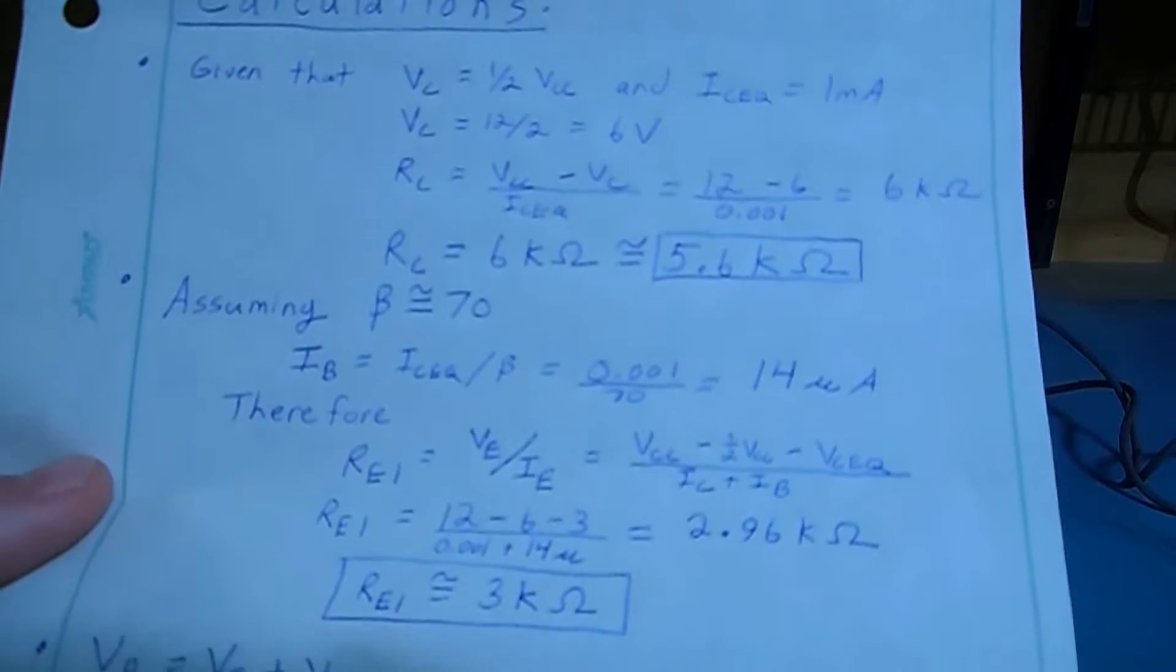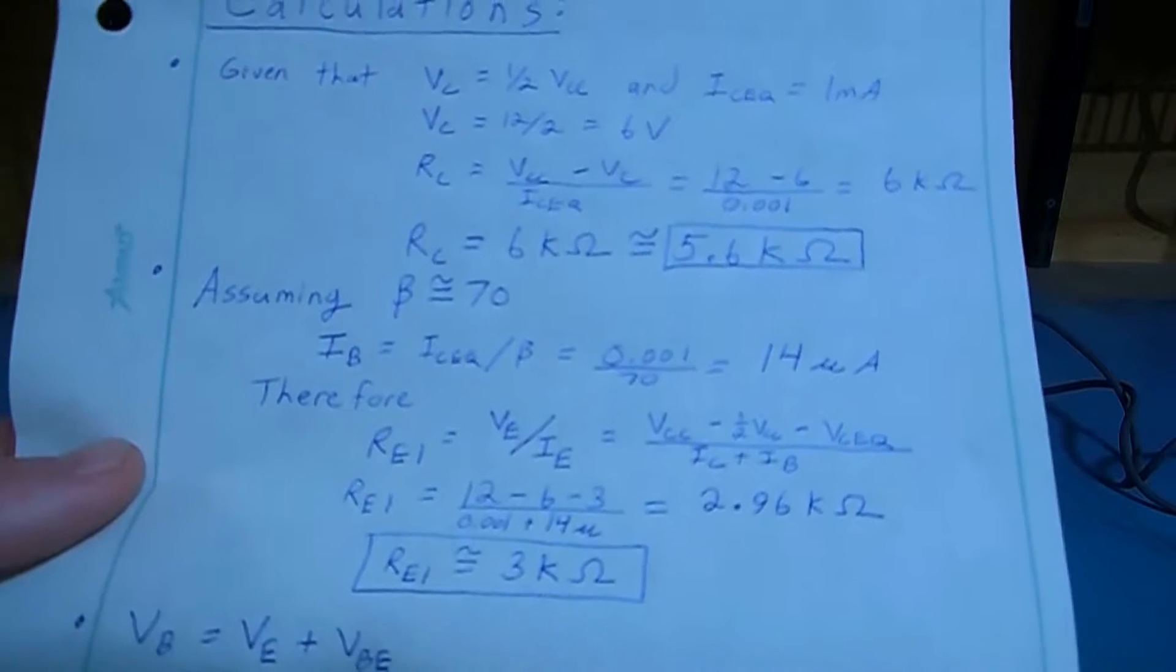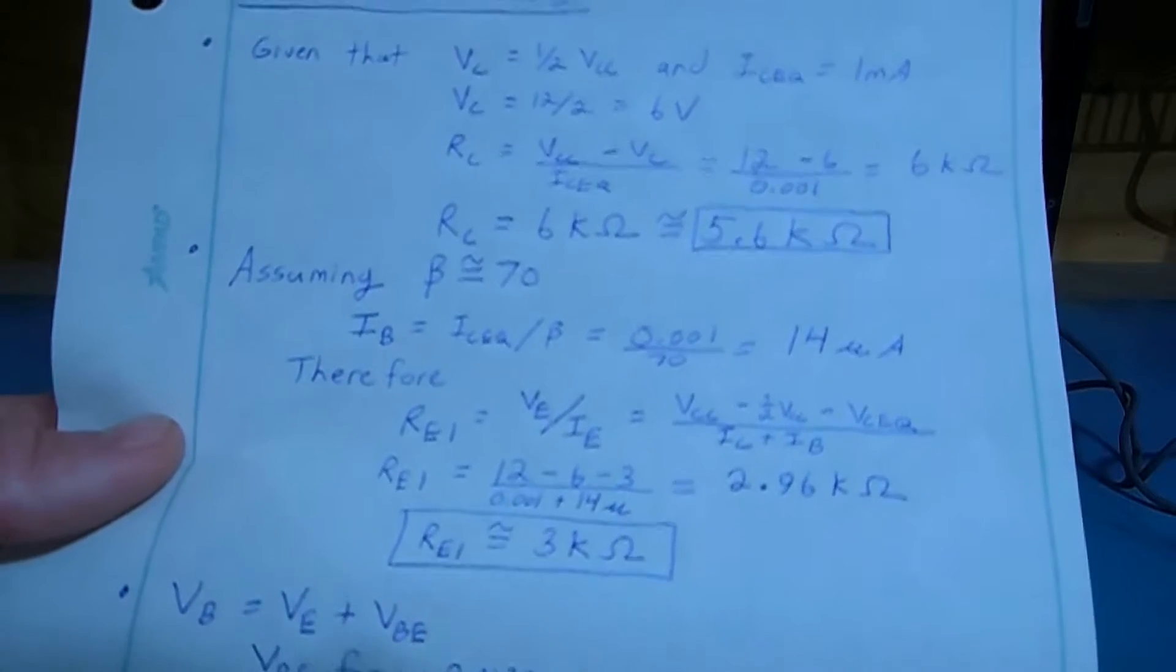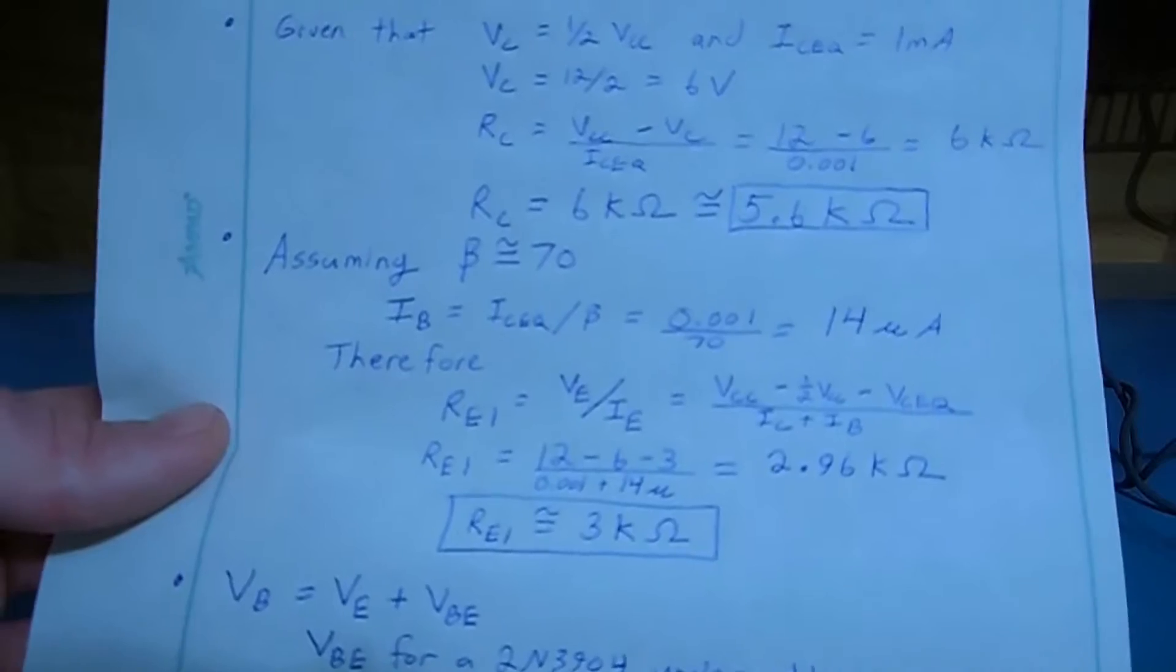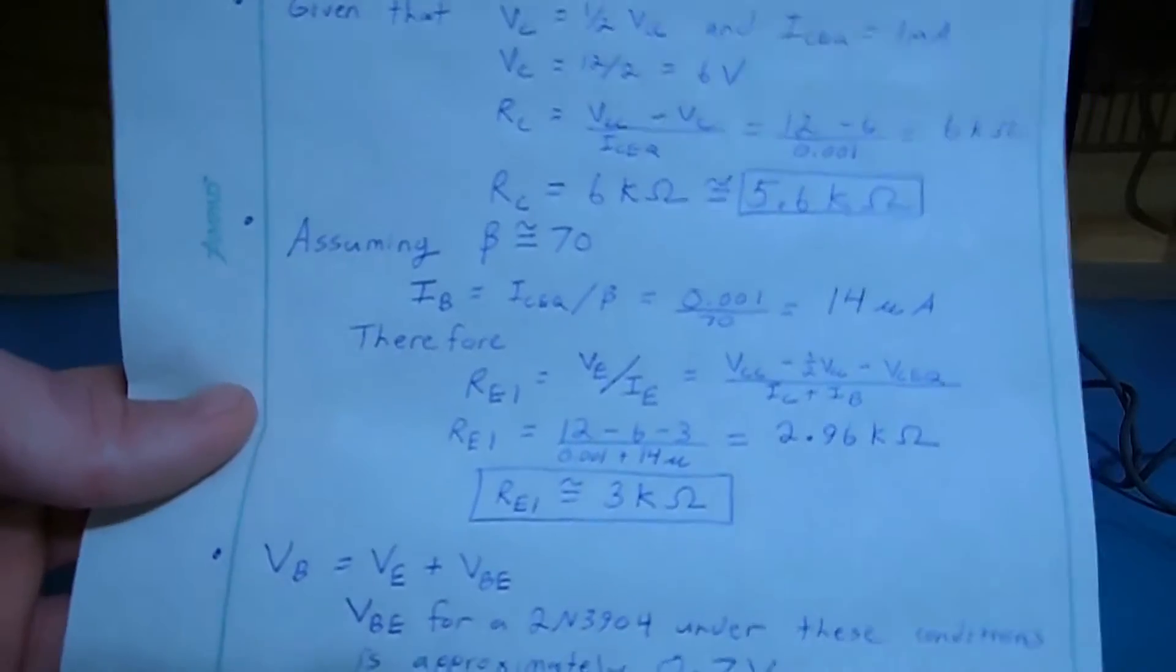So we have 1 milliamp plus 14 microamps for that emitter current. That gives us about 3,000 ohms exactly, which is a standard value.